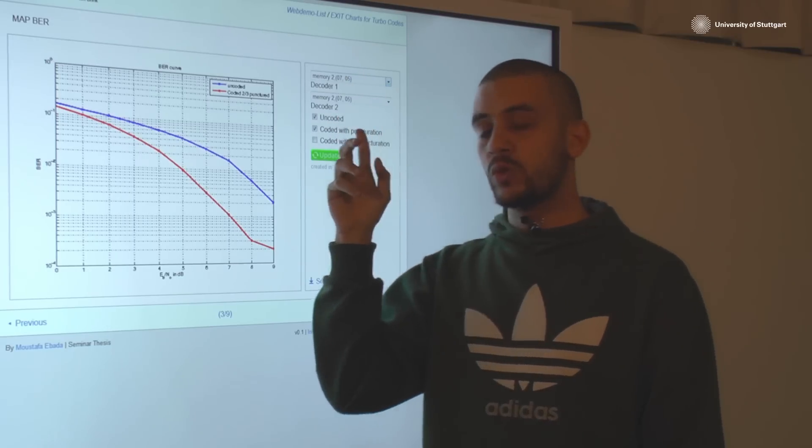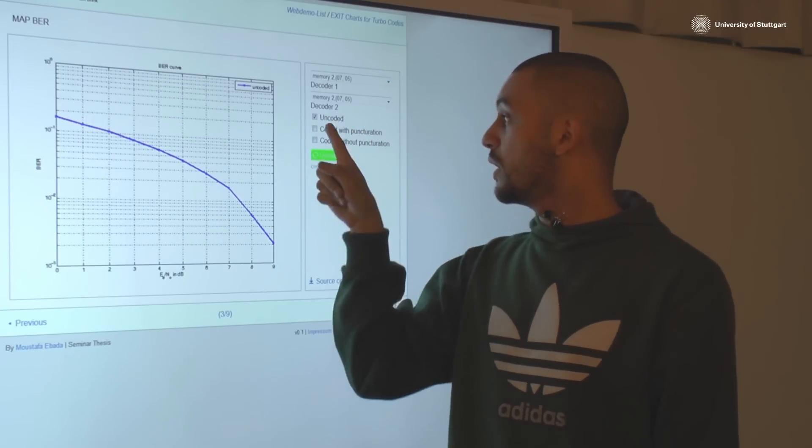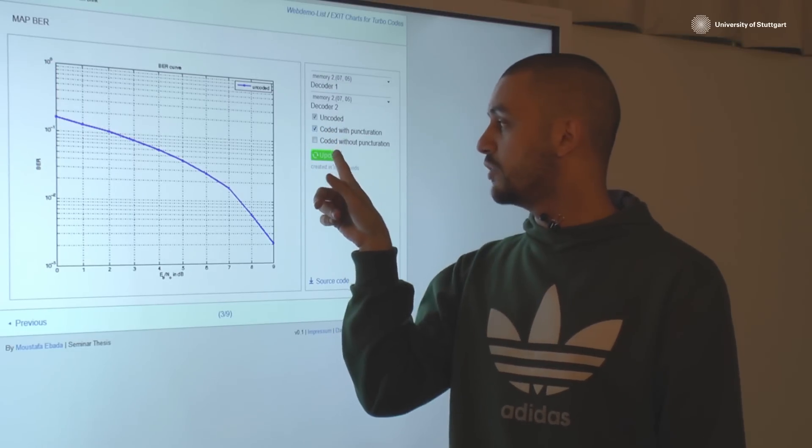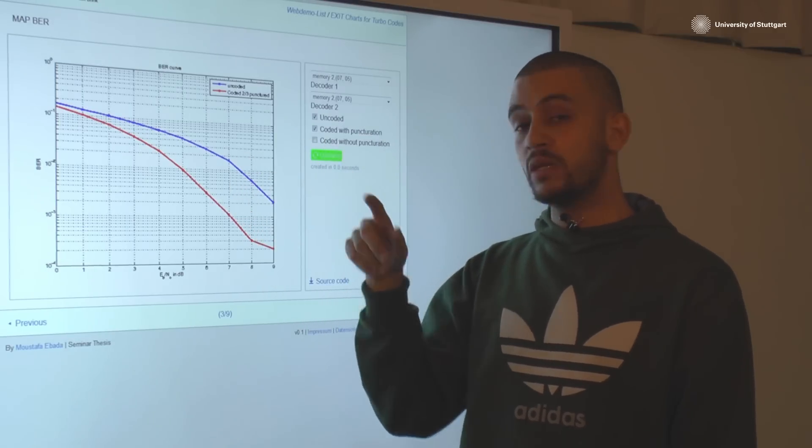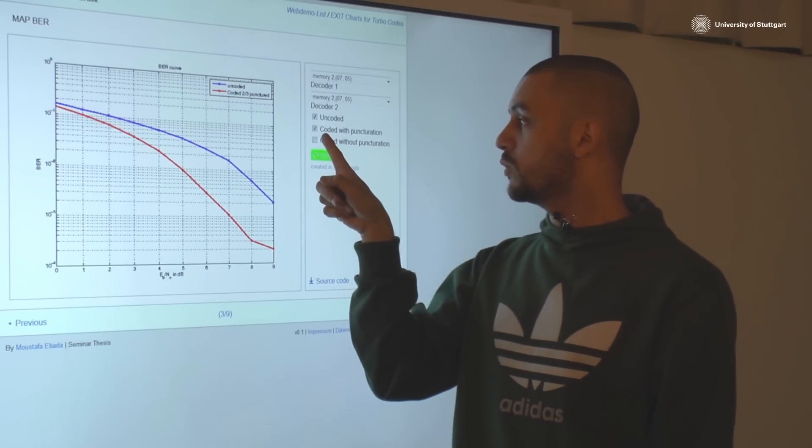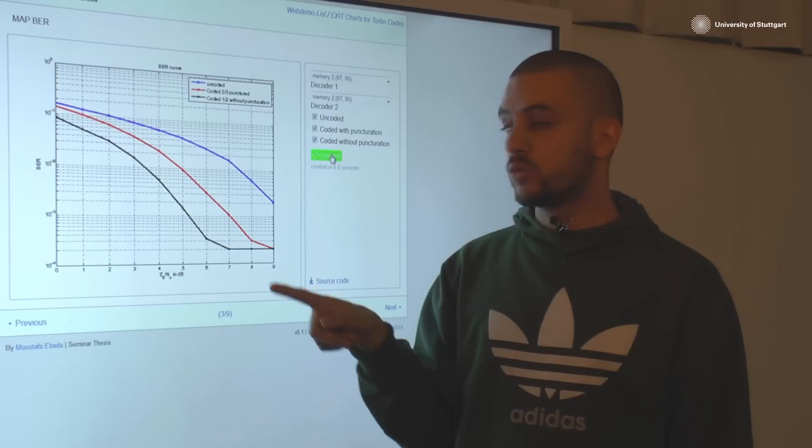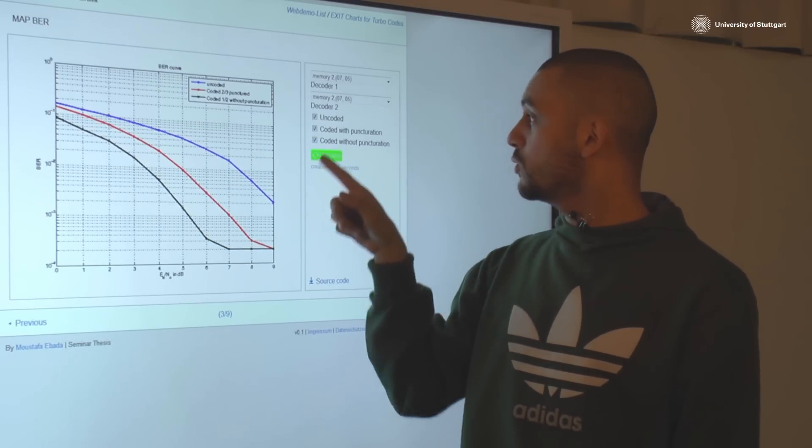You could show the uncoded behavior without any coding. It's very obvious. You could also have the option to choose the coded with punctuation and just update. Then you have both of the performance and compare together. Also you have the option to see the coded without punctuation and compare them with both of the other two. So here you have the three curves: uncoded, punctured, and unpunctured coded.